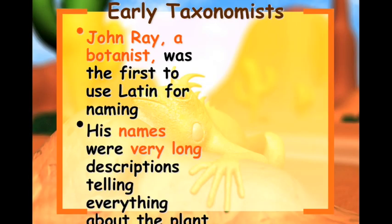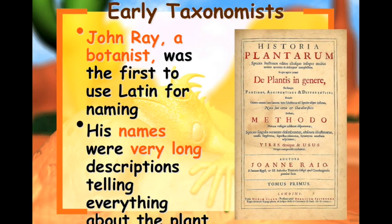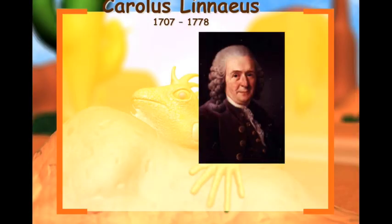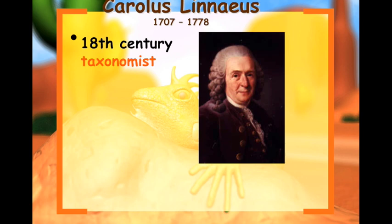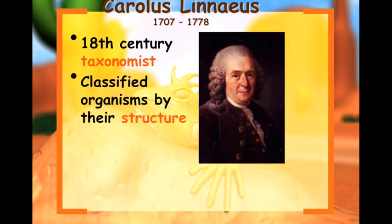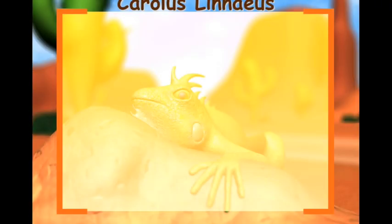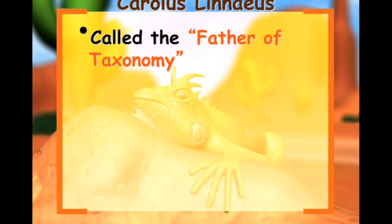The next taxonomist we have is John Ray, who was a botanist. He was the first to use Latin, but his names were very long and descriptive, telling everything about the plants, so nobody really wanted to say the names. Then we have the person we give credit to: Carlos Linnaeus, an 18th century taxonomist who classified organisms by their structure and developed the naming system we still use today. Carlos Linnaeus is called the father of taxonomy.